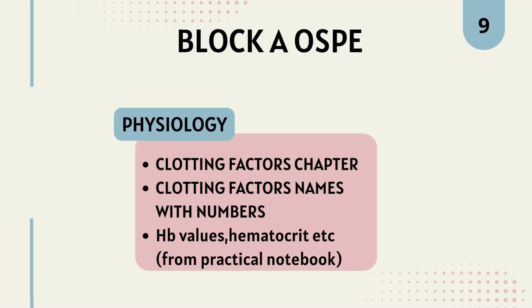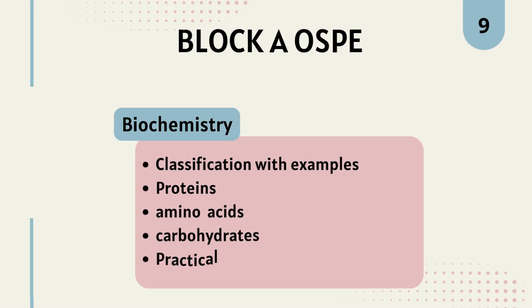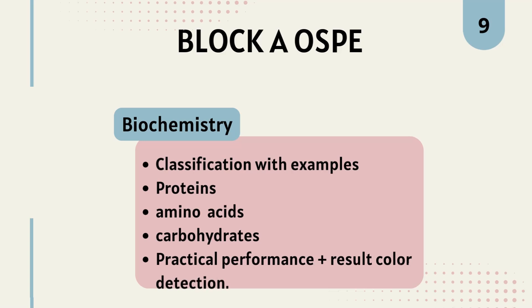In physiology, I was also asked about haemoglobin values, haematocrit, etc. from the practical notebook, so know certain important values. For biochemistry in Block A, you should know the classification with examples of proteins, amino acids, and carbohydrates. Your experiment performance matters a lot, plus result colour detection and specific values in the experiment.